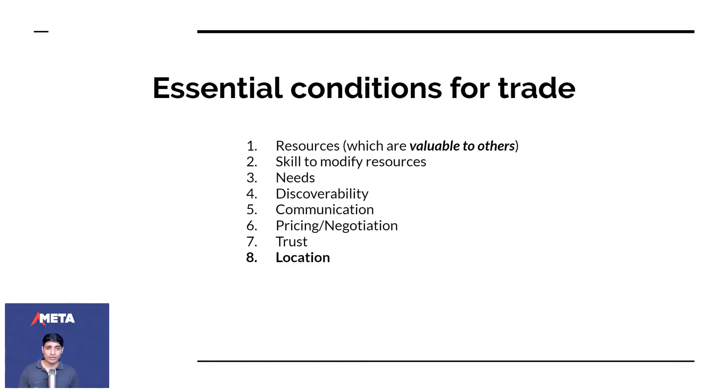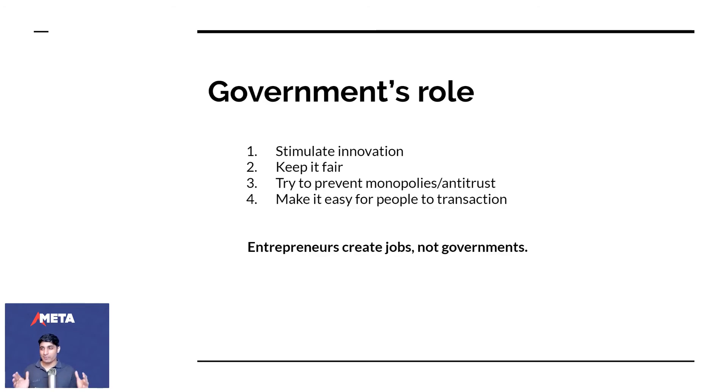The essential conditions for trade, I'm going to repeat this one more time: resources, the skills to modify resources, somebody's needs, discoverability, communication, pricing and negotiation, trust, location. So in all of this, the government's role, and people think it's the government's role to create jobs. It's not. They have no role in this. They just have to make sure that innovation is stimulated. They have to keep it fair. They have to make sure one person is not outright lying to everybody and stealing their money. They have to prevent monopolies and antitrust. I'm not going to get into what that is, but they have to prevent one guy from owning an entire market. Because that creates, I mean, you can set whatever price you want. If you're the only guy selling potatoes in a market, you can set whatever price you want. And the government's role is to make sure there's at least one or two other guys selling potatoes so that the market corrects and normalizes so that people have another person or another seller to go to if this one seller is overpricing them.